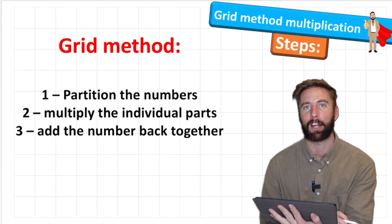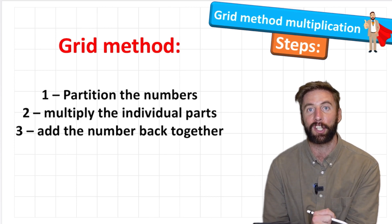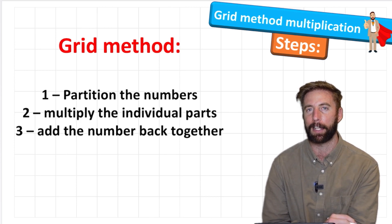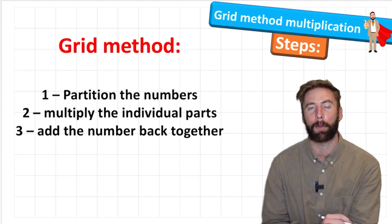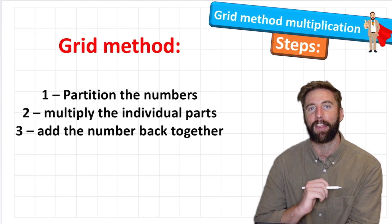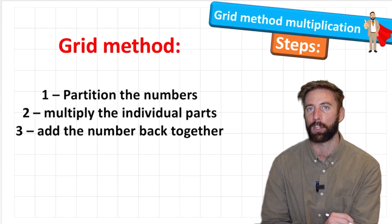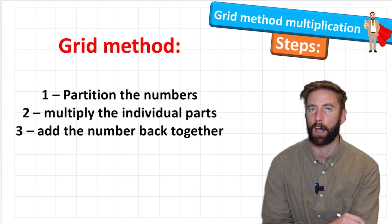But first let's look at our steps for grid method. First step, we're going to partition our numbers. Second, we're going to multiply the individual parts. And third and finally, we're going to add those individual parts back together to get our final answer.